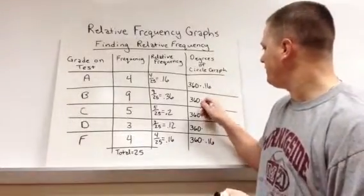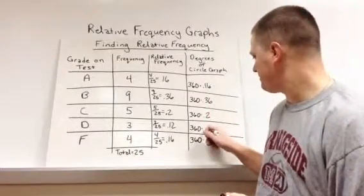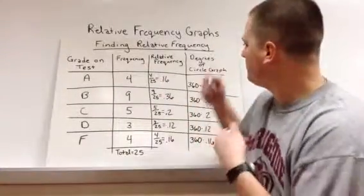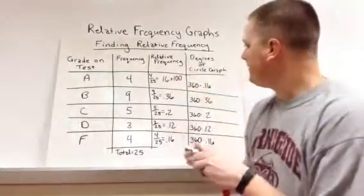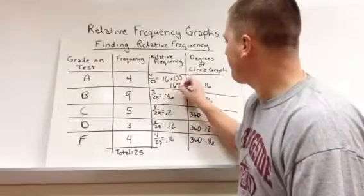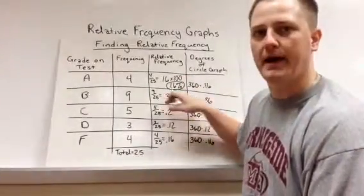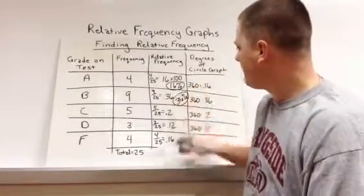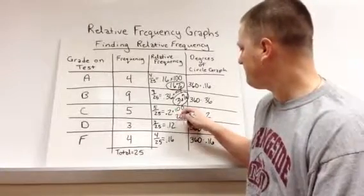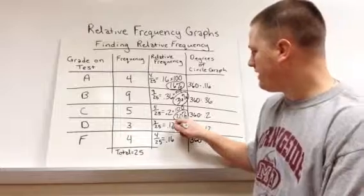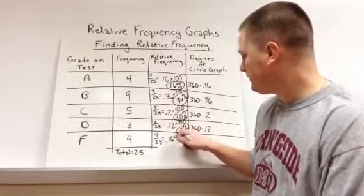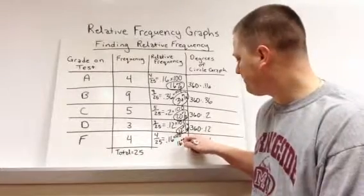The next step is to turn them all into percents. The easiest way to turn anything into a percent is take the decimal and multiply it by 100. So 0.16 times 100 gives us 16%. 0.36 times 100 is 36%. 0.2 times 100 is 20%. 0.12 times 100 is 12%. And 0.16 times 100 is 16%.